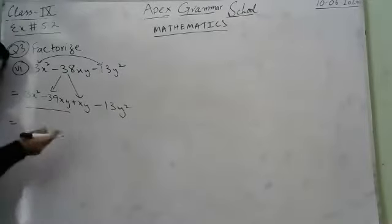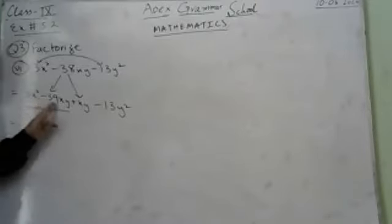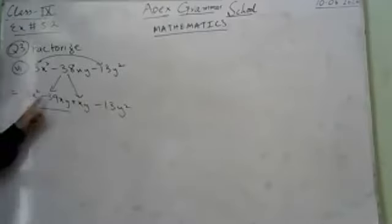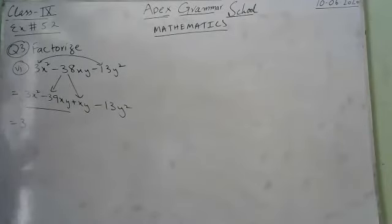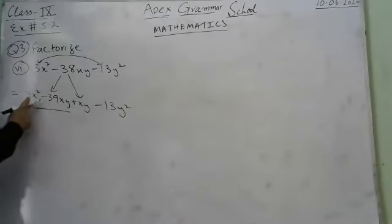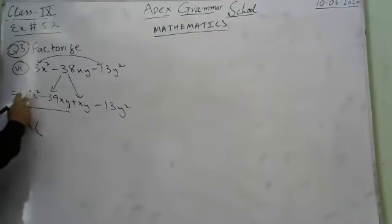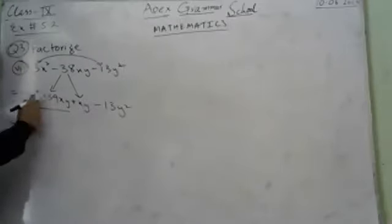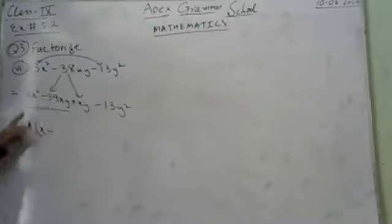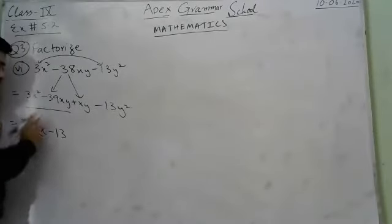From the first two terms, 3x² minus 39xy, take 3x common — giving 3x(x minus 13y). From the remaining terms xy minus 13y², take y common — the variable with the lowest power — giving y(x minus 13y).